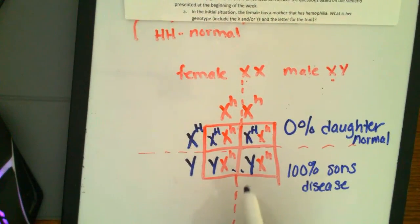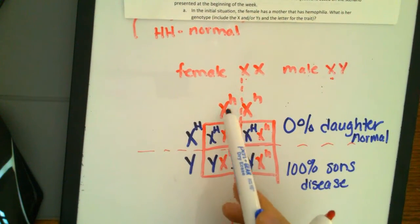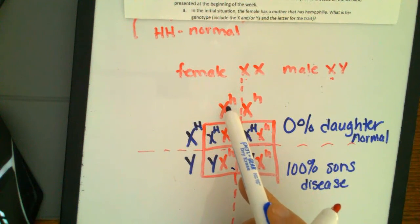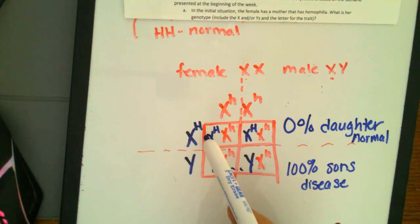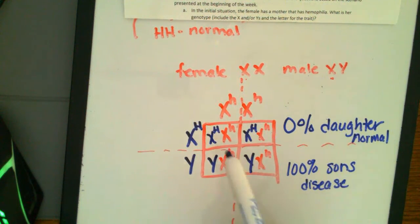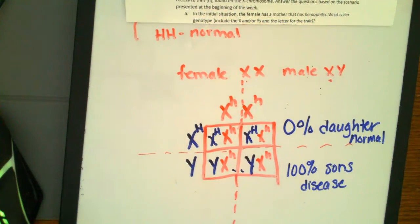So you have to, again, when it says it's X-linked, you have to take into account the fact that this gene is found on the X chromosome. And then separate it out, just like you would do before. But you have to keep in mind the X and the Y's, and there will be nothing, no H's on the Y chromosome, because it's not found on the Y chromosome. It's only found on the X chromosome.